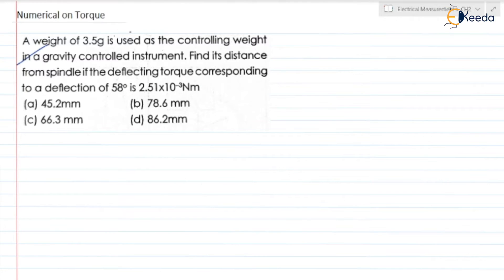Let us read the question. A weight of 3.5 gram is used as the controlling weight in a gravity controlled instrument. Find its distance from spindle if the deflecting torque corresponding to a deflection of 58 degree is 2.51×10^-3 Nm and they have given four options.